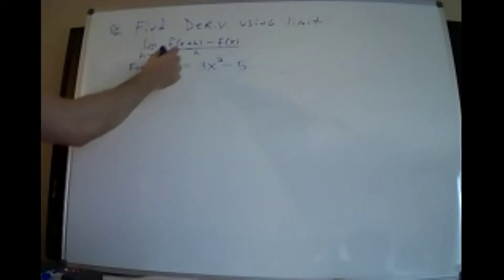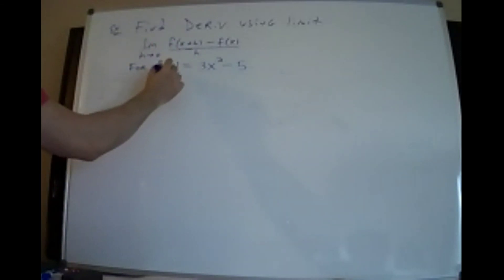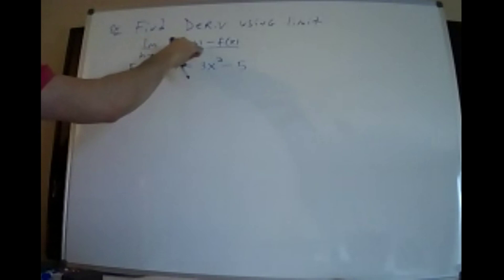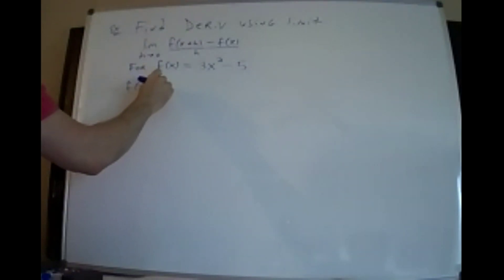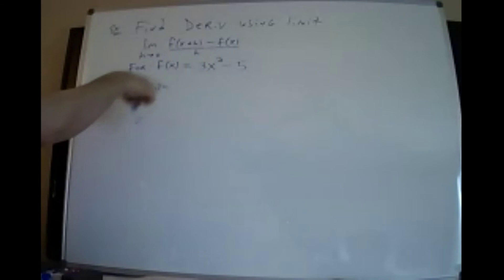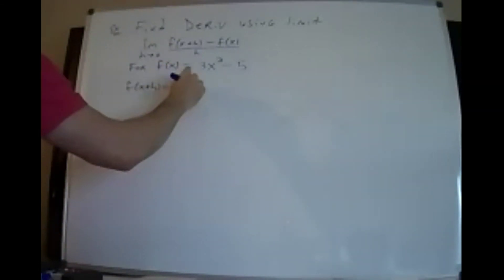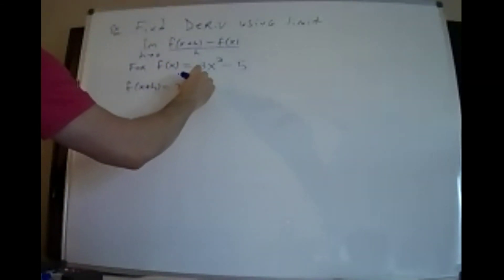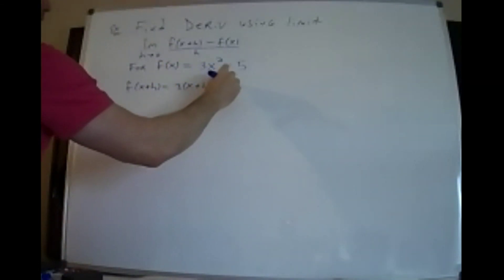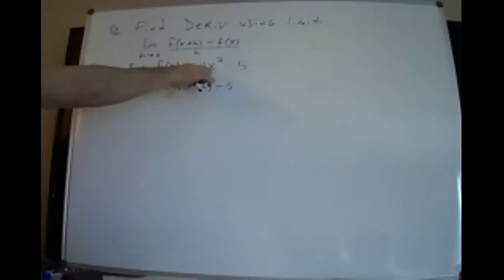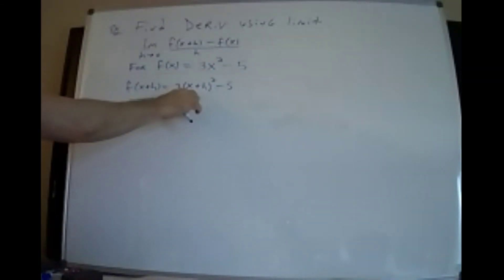The first step is you're going to replace the x with x plus h. You need to compute f(x+h). You can do it within the problem, but I like to do it separate — this is the smart way to do it. So wherever you see x, you put x plus h.